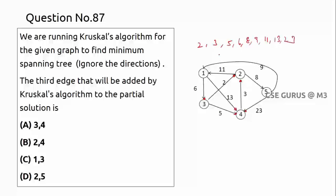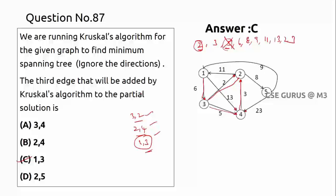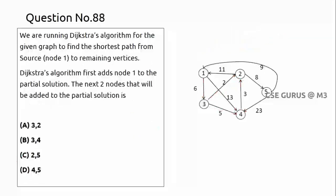...then 39, 23. First I take the edge with cost 2, which is 3-2. That is the first edge selected. Next, cost 3 is edge 2-4 — I select that. Next is cost 5, but selecting it would create a cycle: 3-2, 2-4, 4-5 forms a cycle, so it cannot be selected. Next is cost 6, which is edge 1-3. So the third edge selected is 1 comma 3, option C.